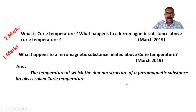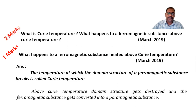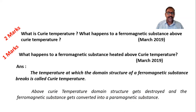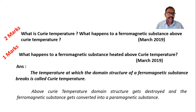If we continue to heat the substance above the Curie temperature, the ferromagnetic substance gets converted into a paramagnetic substance. In simple words, above the Curie temperature, a ferromagnetic substance is converted into a paramagnetic substance.